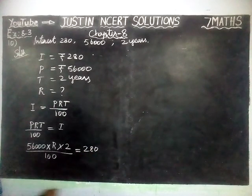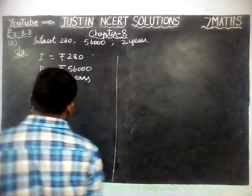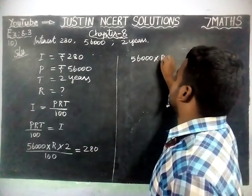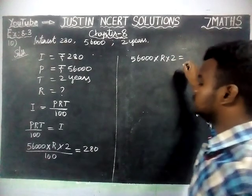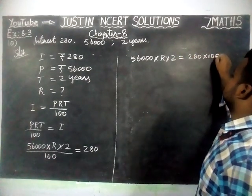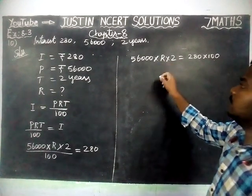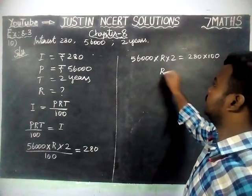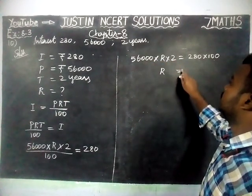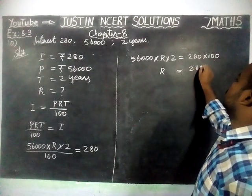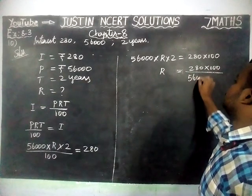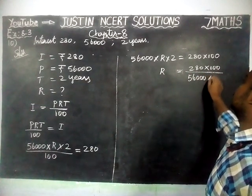Now we are going to take 100 to the right-hand side. So, 56,000 × R × 2 = 280 × 100. We are keeping R on the left-hand side, and taking 56,000 × 2 into division: 280 × 100 divided by 56,000 × 2.